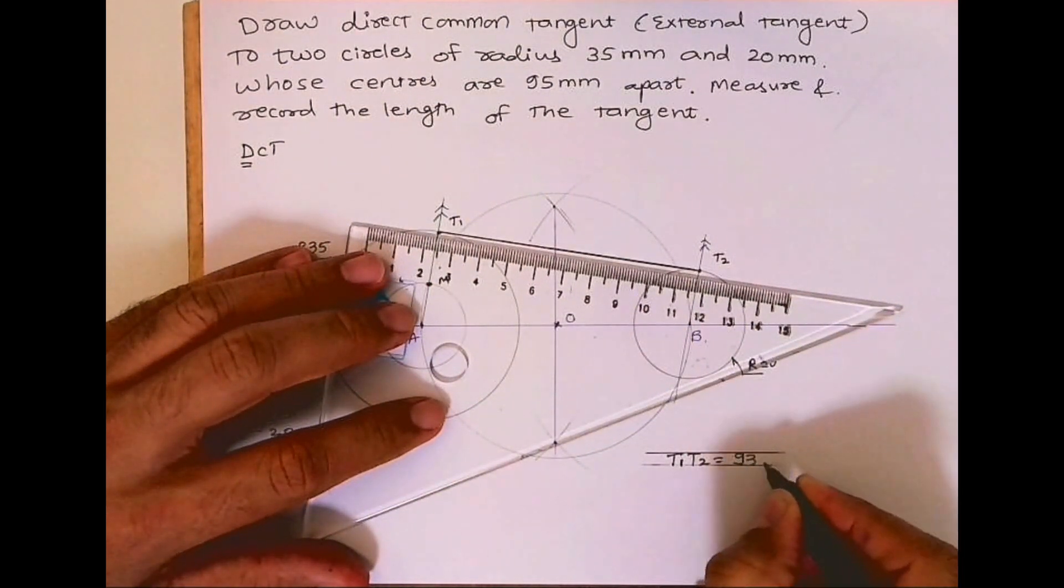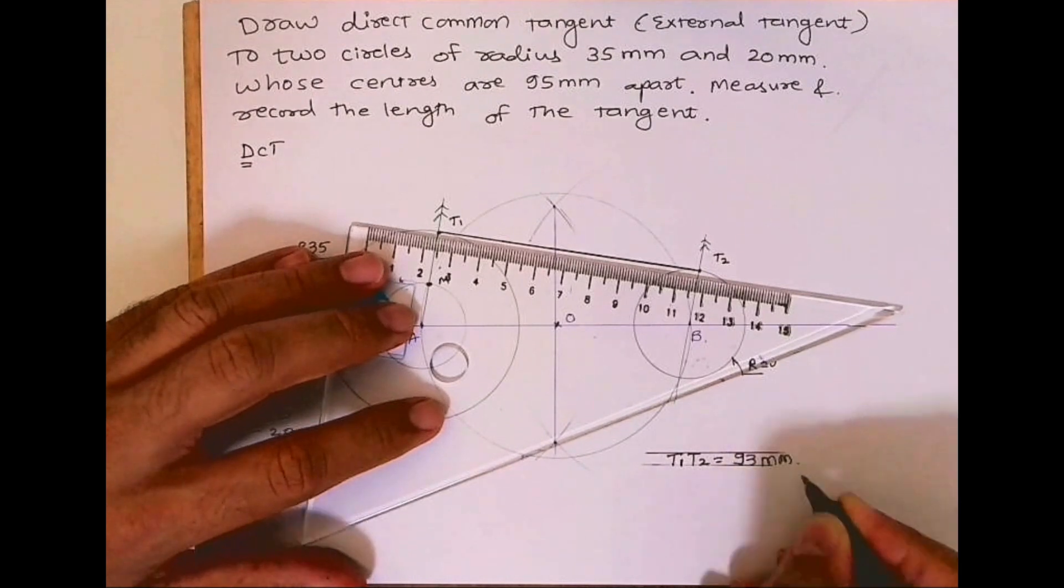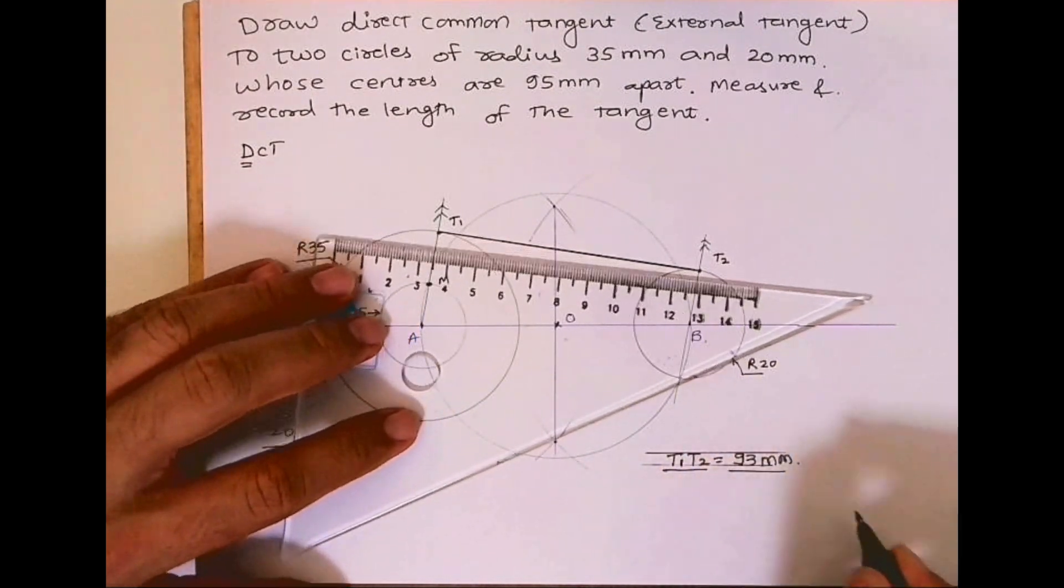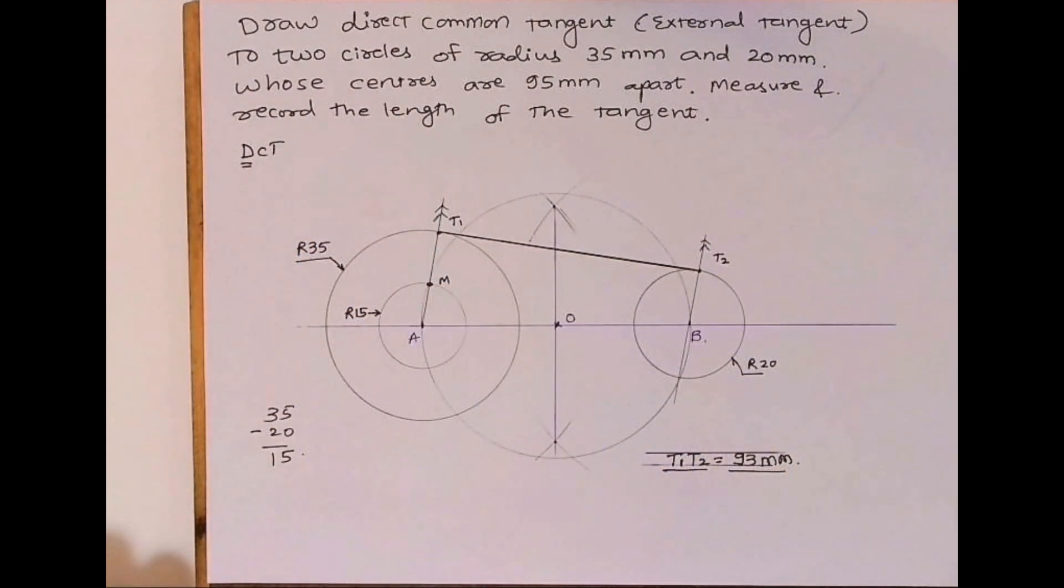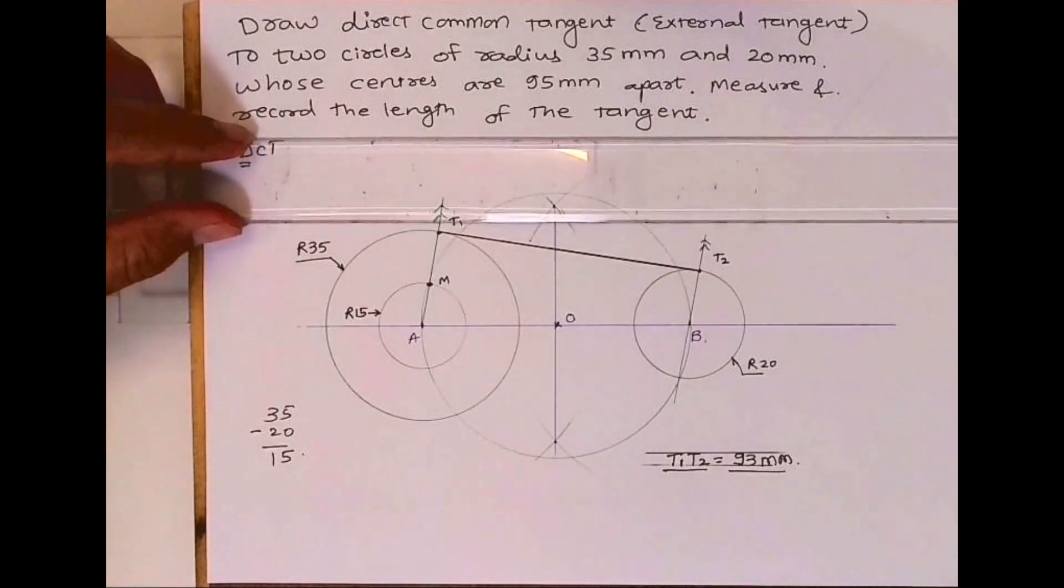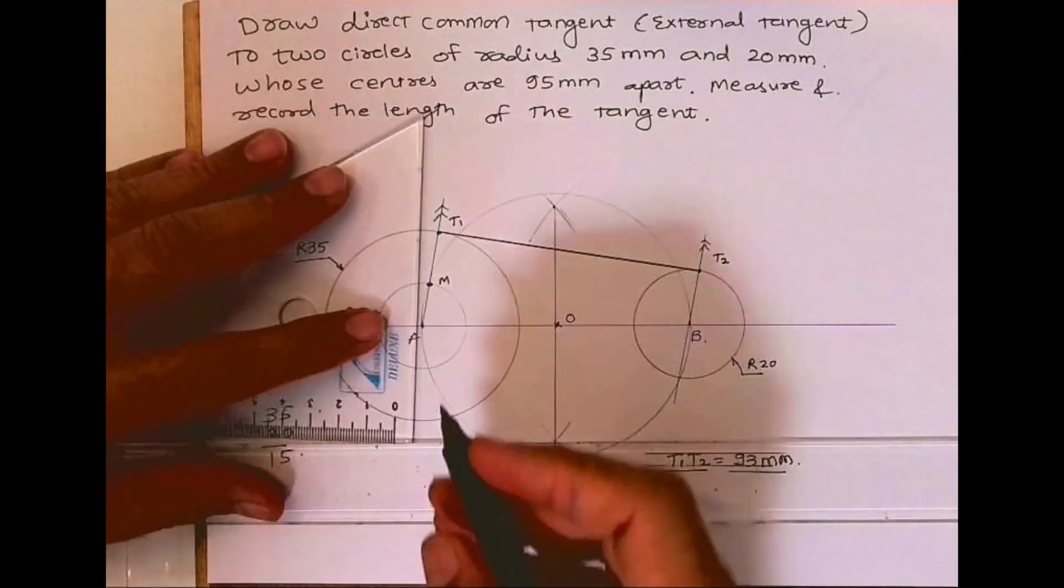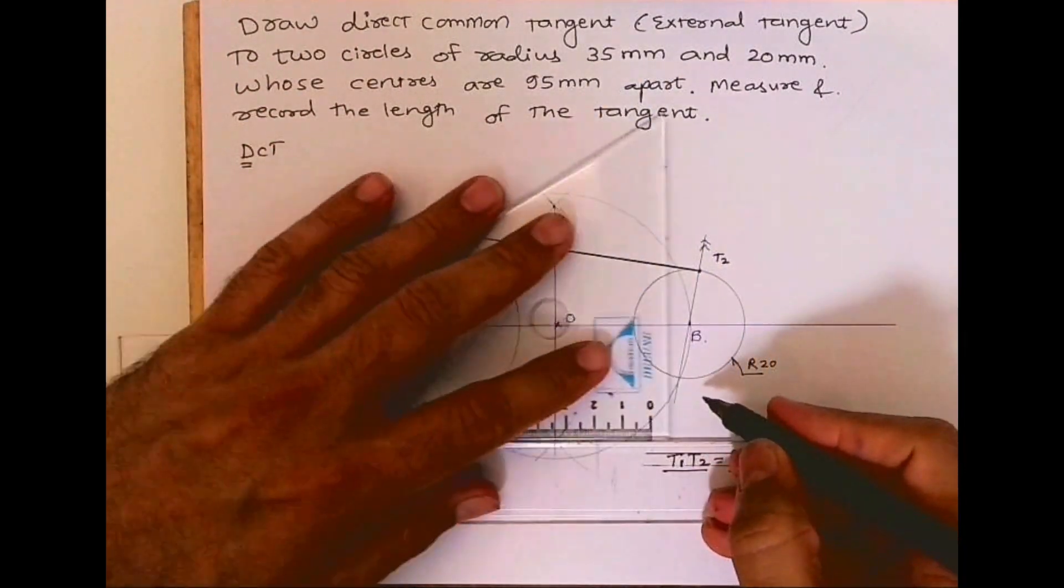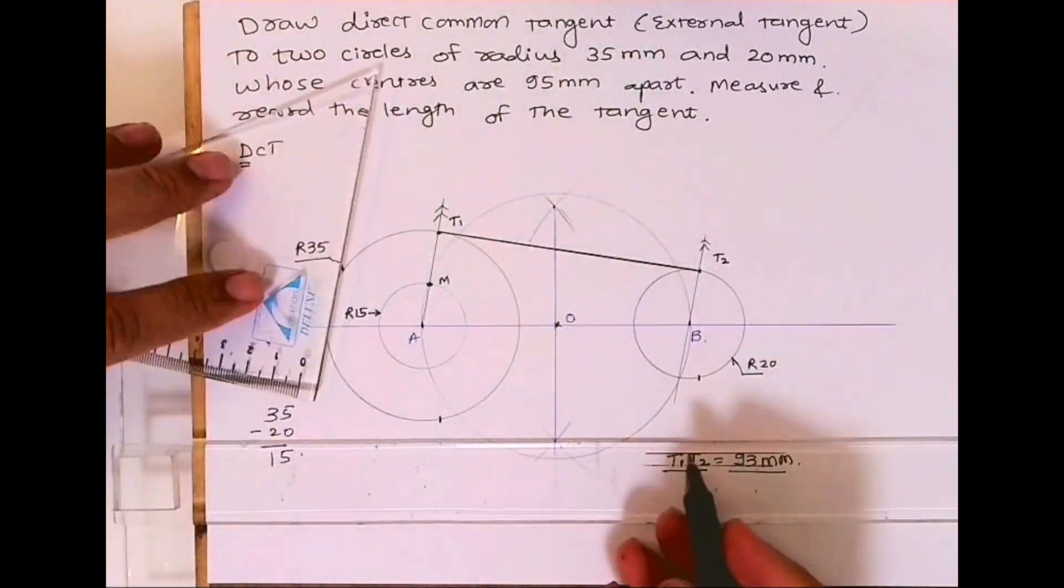So 93 mm. Now let's say if they ask you to draw two tangents. In this problem, if they say we want you to draw two tangents, just mark the point from top T1 T2 on the circle.